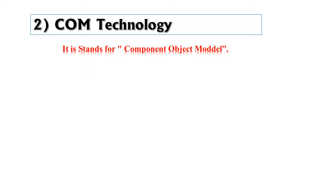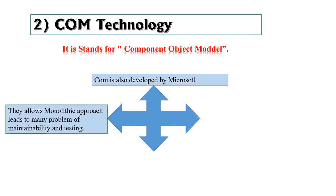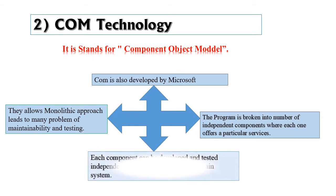The second origin is COM technology, which stands for Component Object Model. It was also developed by Microsoft. The monolithic approach leads to many problems of maintainability and testing, so the program is broken into a number of independent components where each one offers a particular service. Each component can be developed and tested independently and then integrated into the main system.